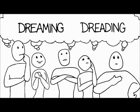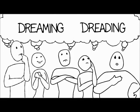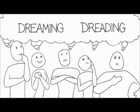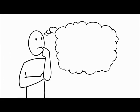Whether dreaming or dreading, our role in the future we imagine is usually passive, where the future is something that happens to us and to those around us. But there's a third way we can think about the future.